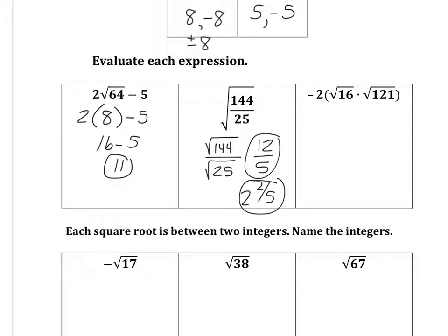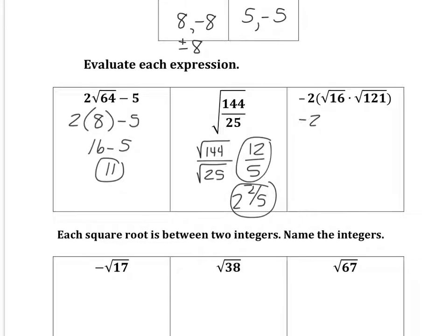In the next one, we're going to do parentheses first because of order of operations. Square root of 16 is going to be 4. Square root of 121 is 11. 4 times 11, 44. And then times a negative 2, a negative times a positive is a negative, negative 88.